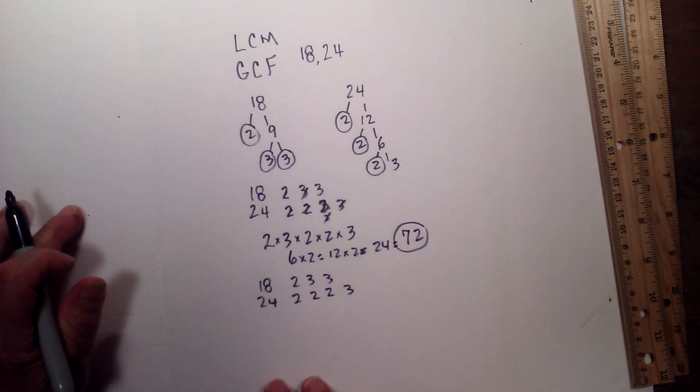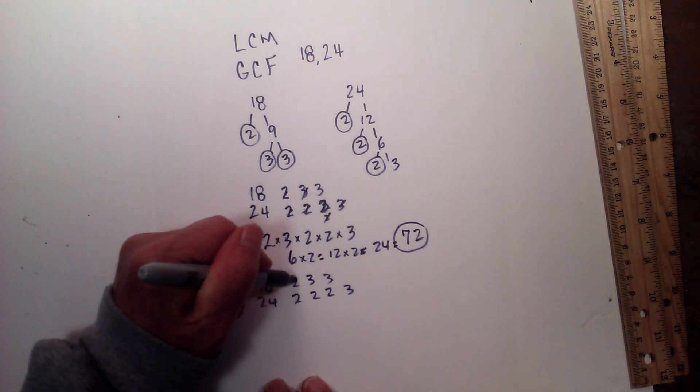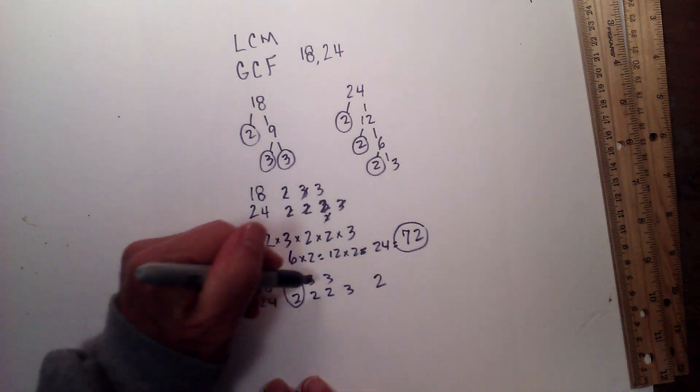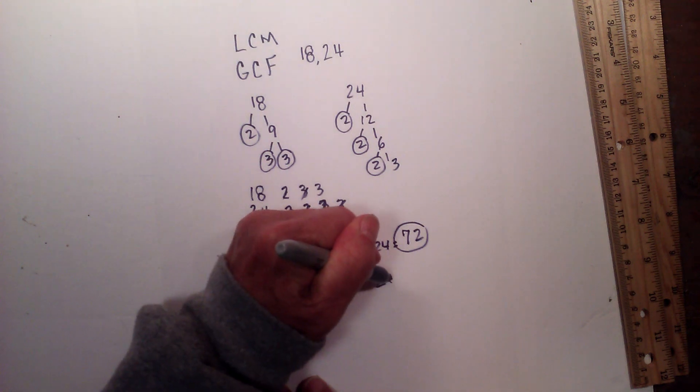Now for the greatest common factor, you have to find a number that is common in both of them. So these 2's are common, so I will have a 2, and then the 3 is common, so it would be 2 times 3.